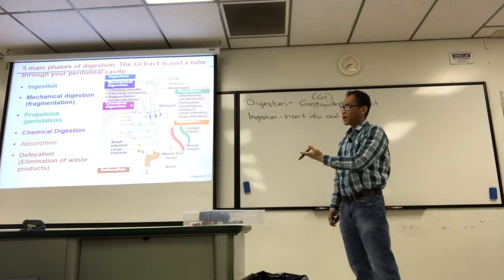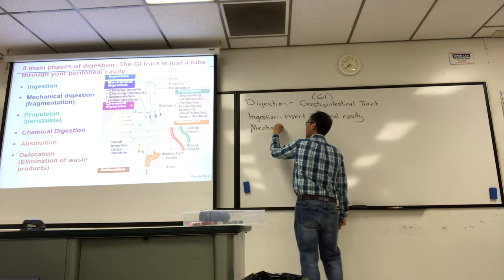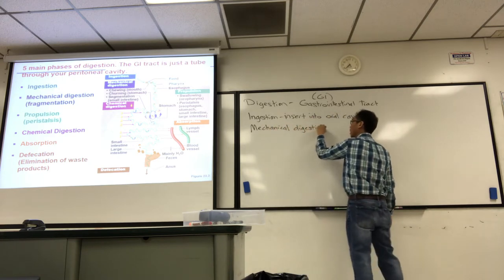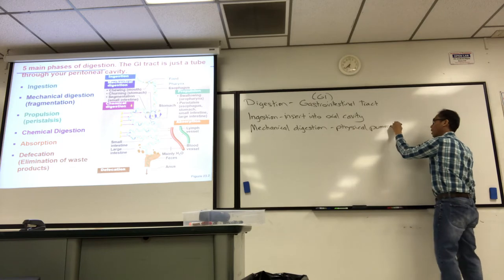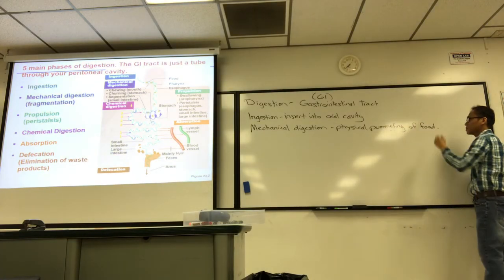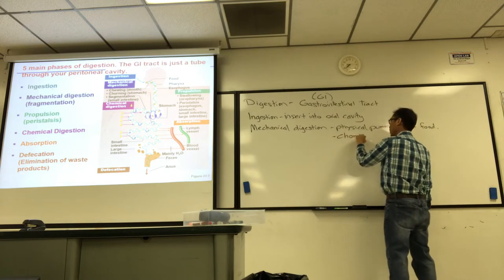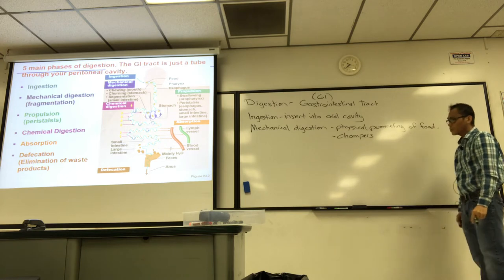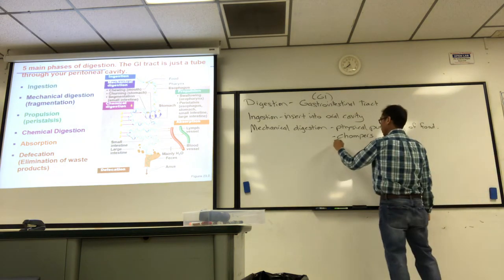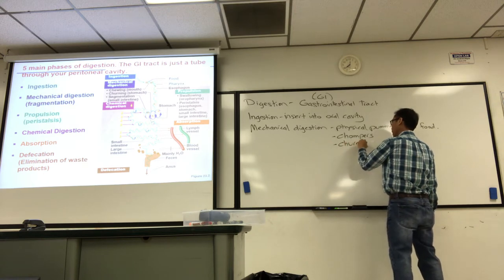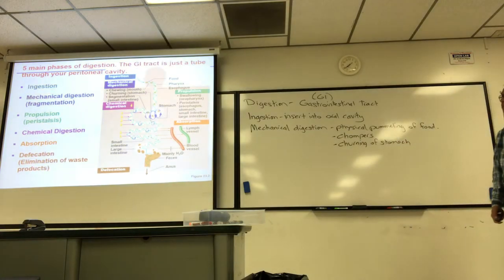Mechanical digestion just refers to fragmentation — the physical pummeling of food. That includes, well, it starts primarily with your mouth, your chompers, your teeth — just chew it up. And also your stomach: when you swallow food and it gets down to your stomach, the churning of the stomach also provides a light pummeling. So primarily mouth and stomach provide most of the mechanical digestion.